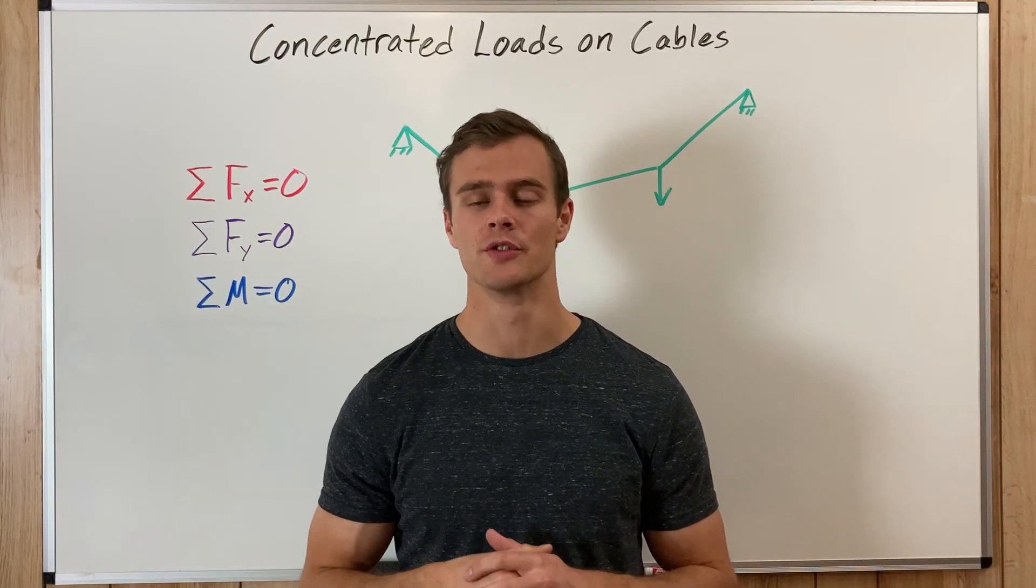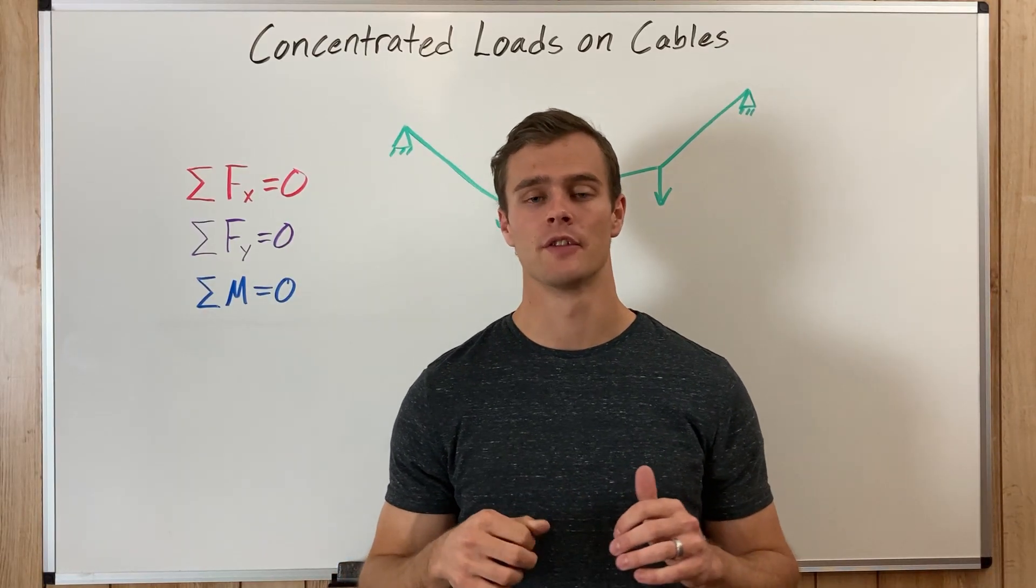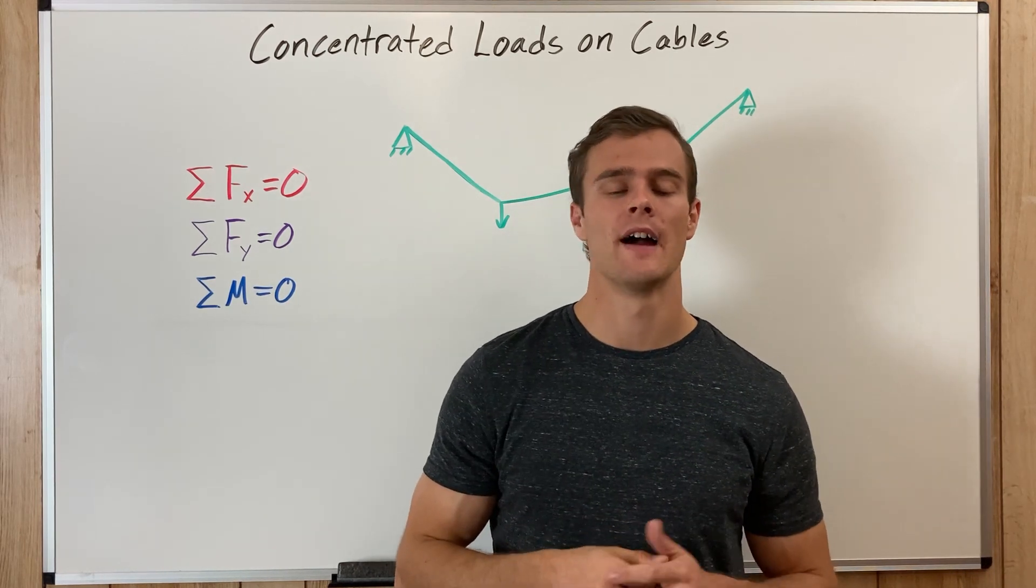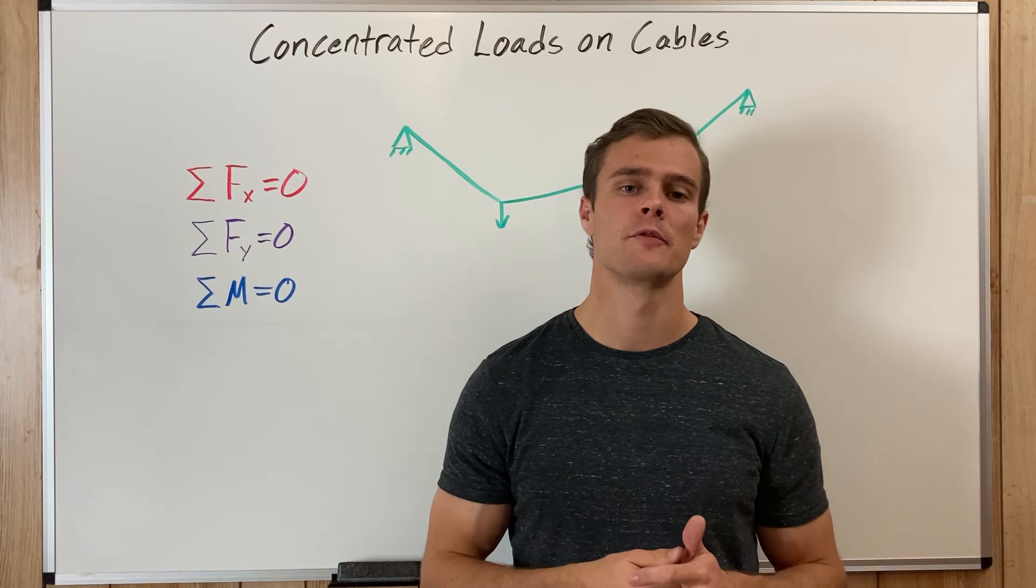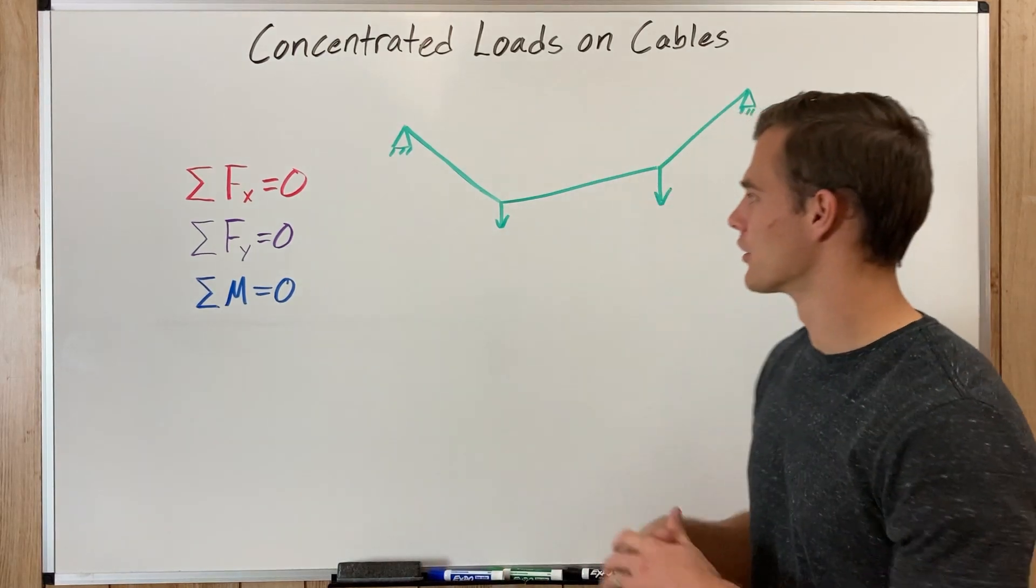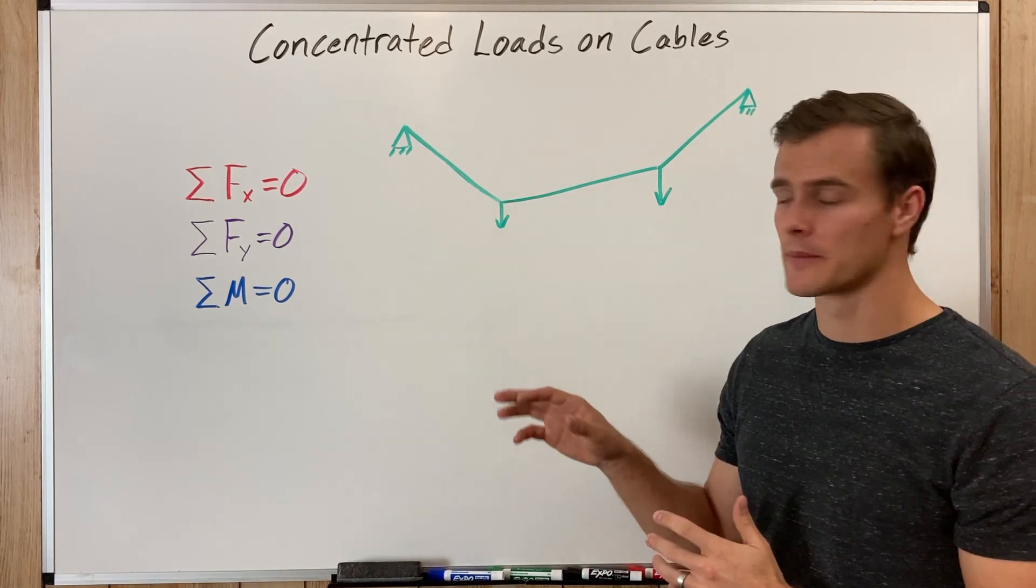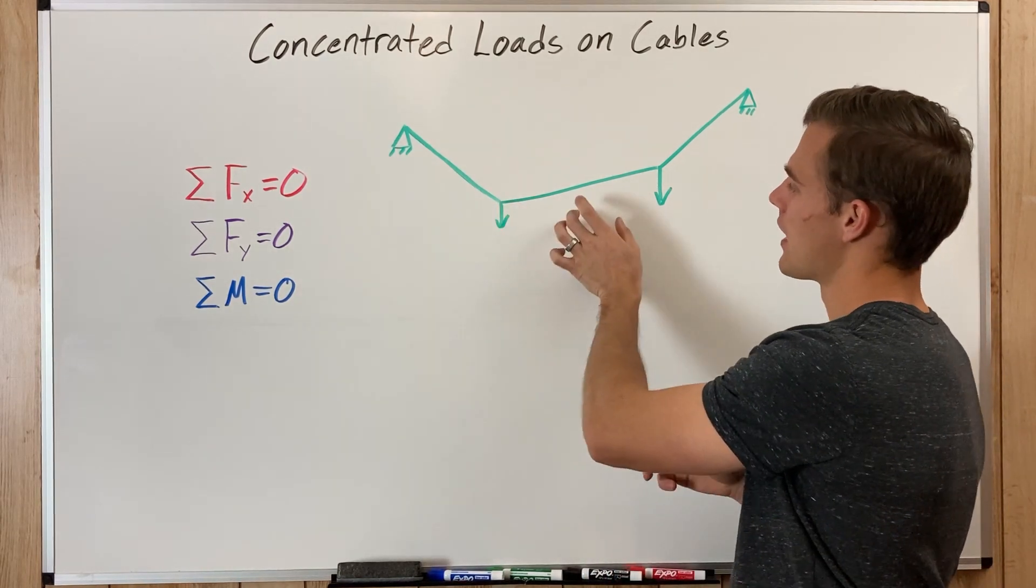Cables that are under concentrated loads are cables that have loads hanging from individual points along that cable. That might be a rope or cable hanging off of them or a hook hung on to them, and it might look something like this where you've got your forces pulling down. We approximate that these sections are straight.